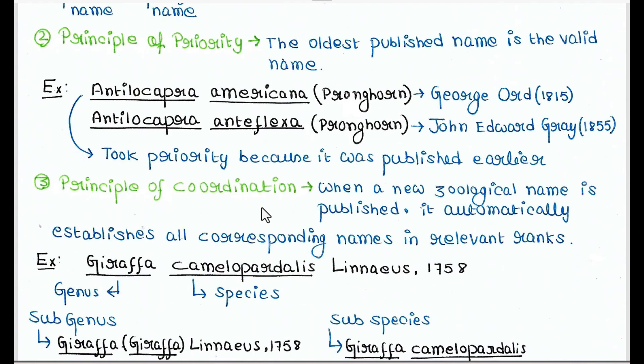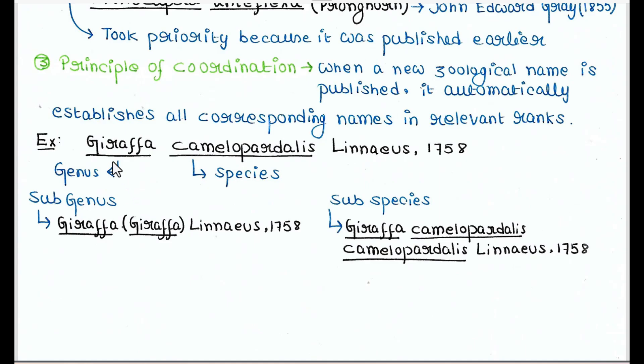Next is principle of coordination. So when a new zoological name is published, it automatically establishes all corresponding names in relevant ranks. For example, the scientific name of giraffe is Giraffa camelopardalis Linnaeus 1758. Here, Giraffa is the genus, camelopardalis is the species. Now the sub-genus of this is Giraffa Giraffa Linnaeus 1758. And the sub-species is Giraffa camelopardalis camelopardalis Linnaeus 1758. So from the scientific name itself, you can know all the other names.